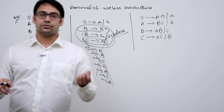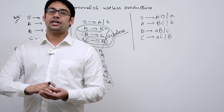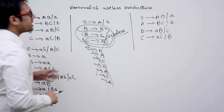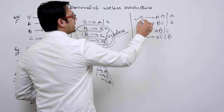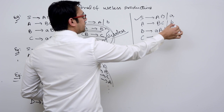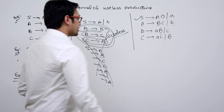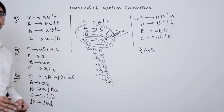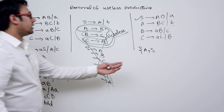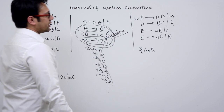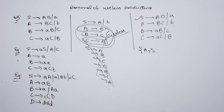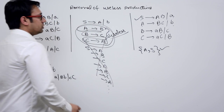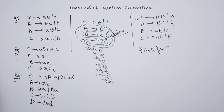From this given grammar, first identify all the useful productions — those productions which are directly generating a terminal are called useful. S is directly generating a terminal: S derives small 'a'. A is directly generating a terminal: A derives small 'b'. So the useful symbols so far are A and S. Now check if there is any right-hand side made up only of A and S, or any combination of A and S. There is no such right-hand side.